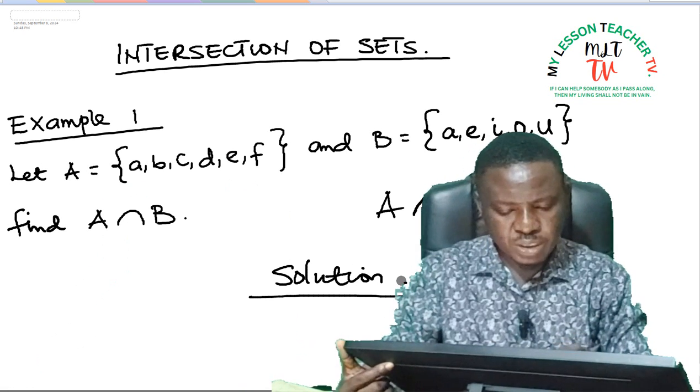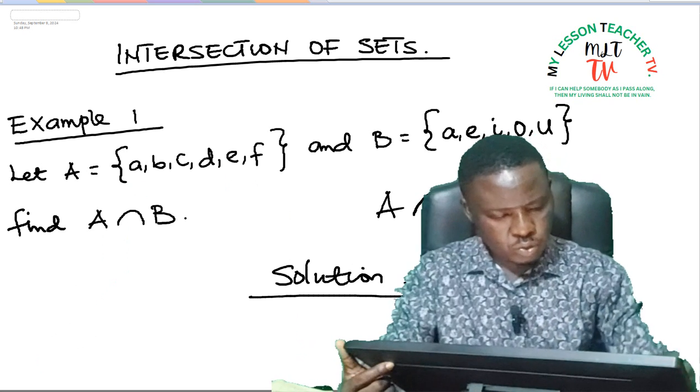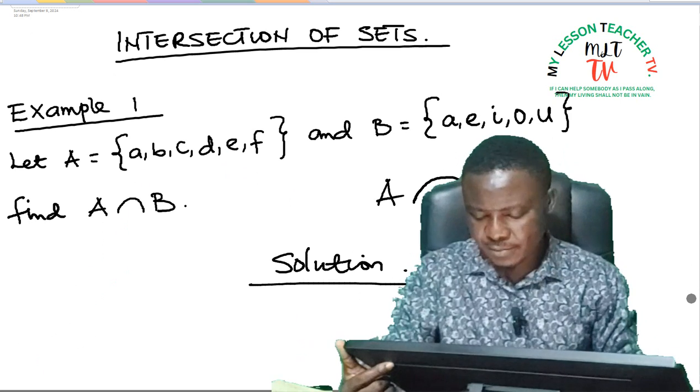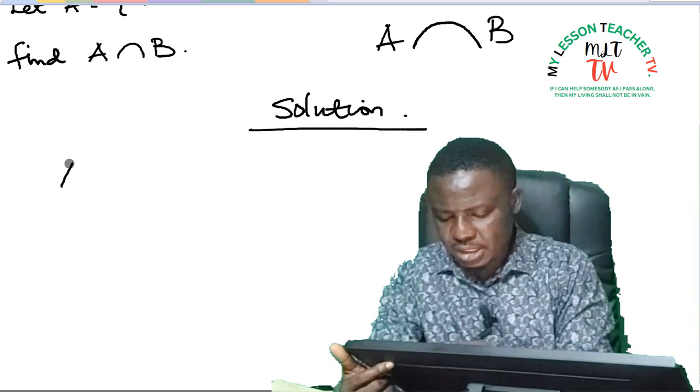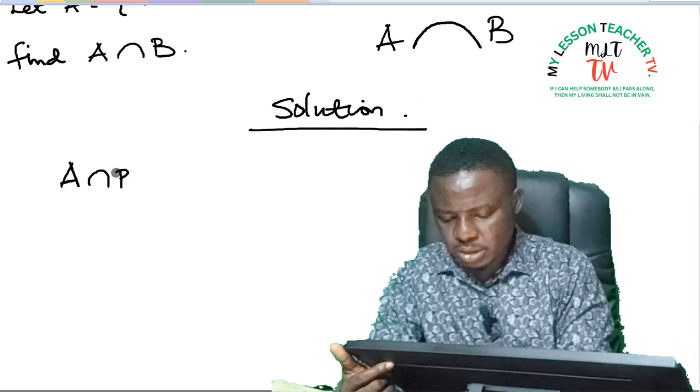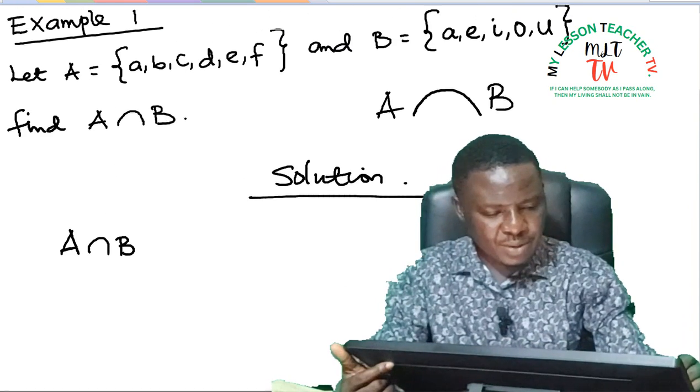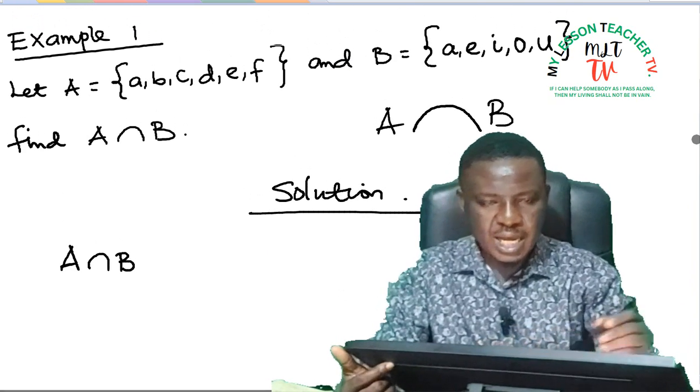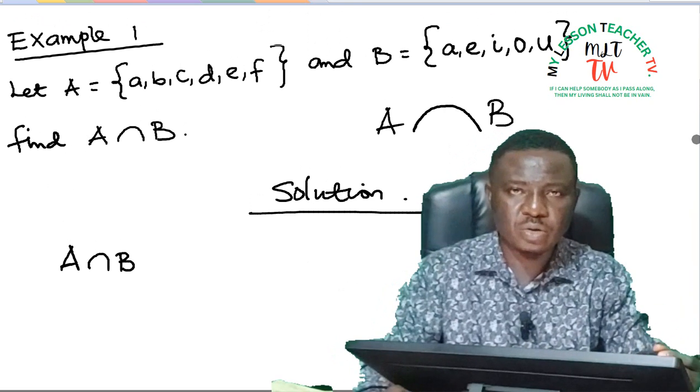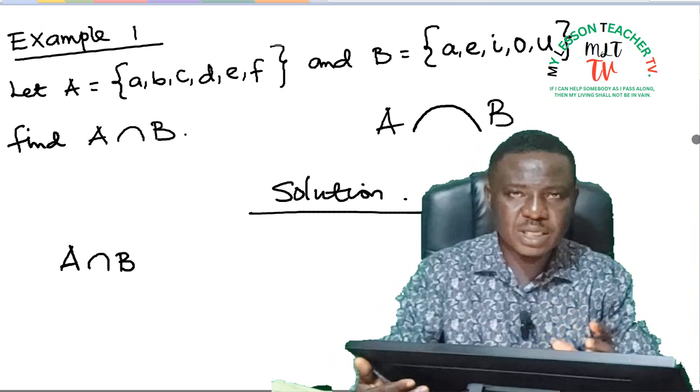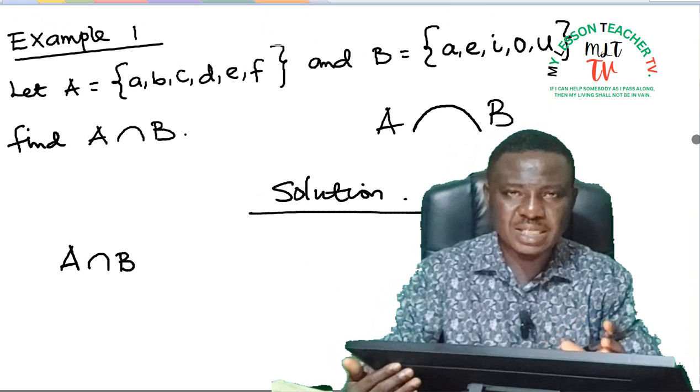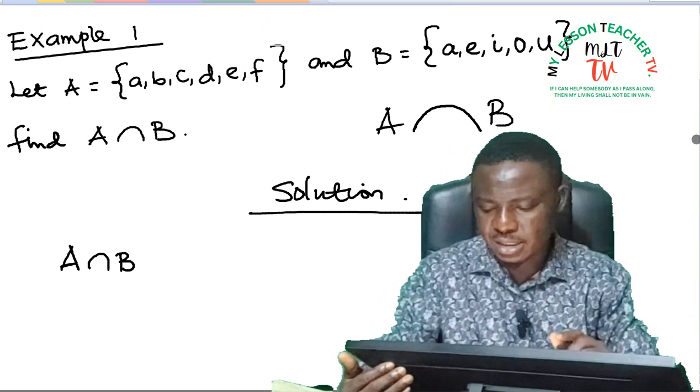And B is said to be a set of elements A, E, I, O, U. And we are asked to find the intersection of these two sets. So A intersection B means you have to select all the elements you find in A and B without repetition. Those that are common in A and cannot be found in B are not in their intersections.